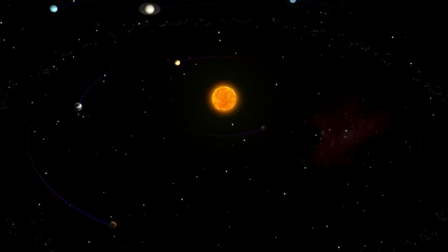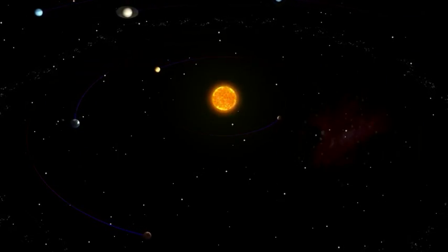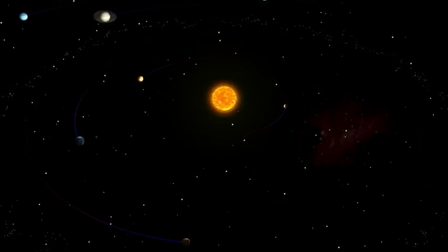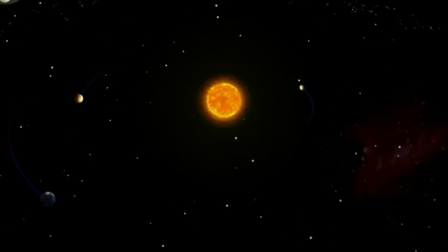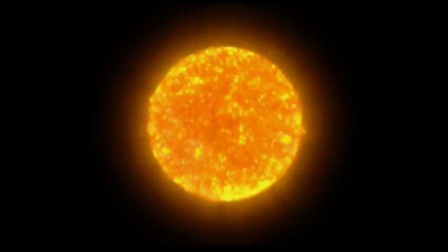As stars go, our Sun is an average yellow star, but it is so massive that it contains 99.8% of all the mass in the solar system.